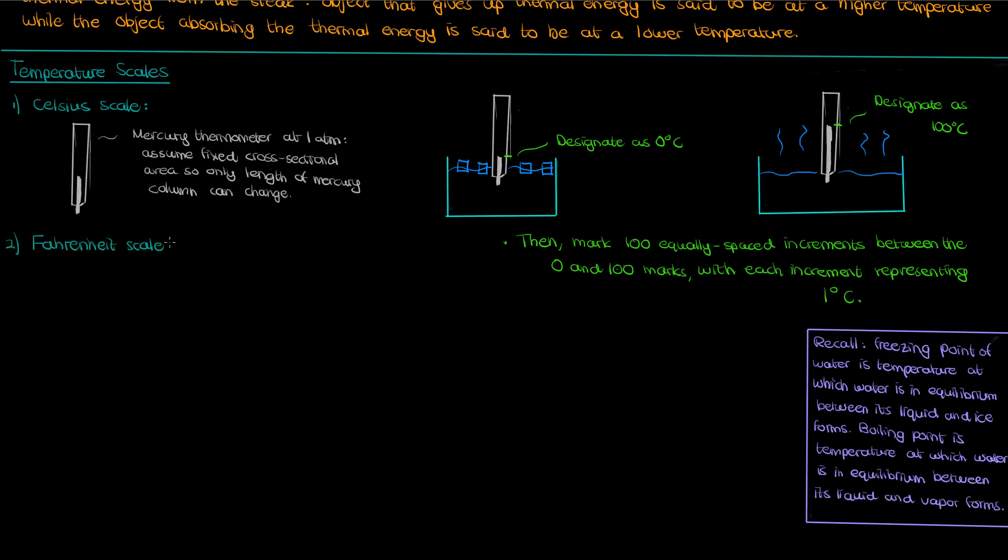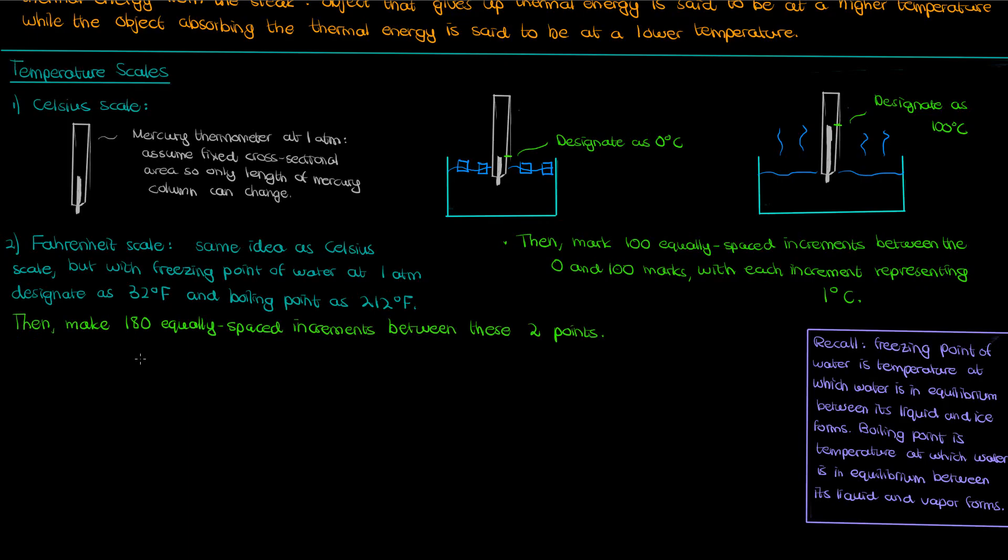Let's now move to the Fahrenheit scale. It's a very similar idea as the Celsius scale, except now you designate the freezing point of water as 32 degrees Fahrenheit and the boiling point of water as 212 degrees Fahrenheit on your thermometer. You then make 180 equally spaced increments between these two points and arrive at your Fahrenheit scale.